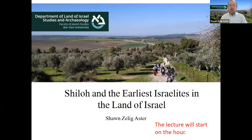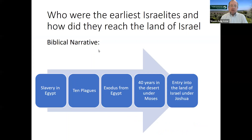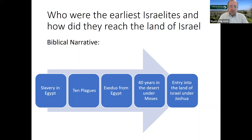Our talk today will deal with the biblical period and the large and thorny question of how the Israelites arrived in the land of Israel. If you're up on your Bible or even if not, you're surely aware that this question is amply addressed in the biblical narrative. We hear about the slavery in Egypt, the 10 plagues, the exodus, 40 years in the desert under Moses, and then the entry into the land of Israel under Joshua. This is the bread and butter of the biblical narrative.